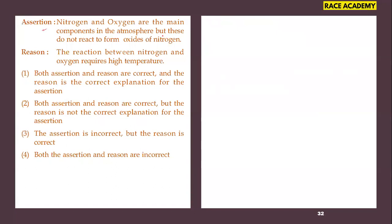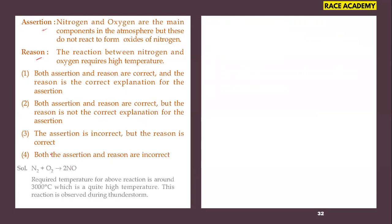Assertion: nitrogen and oxygen are the main components of the atmosphere but do not react to form oxides of nitrogen under normal conditions. Reason: the reaction between nitrogen and oxygen requires very high temperature — about 3000°C — which is why it is observed only during thunderstorms. Both the assertion and reason are correct, and the reason is the correct explanation for the assertion. First option.